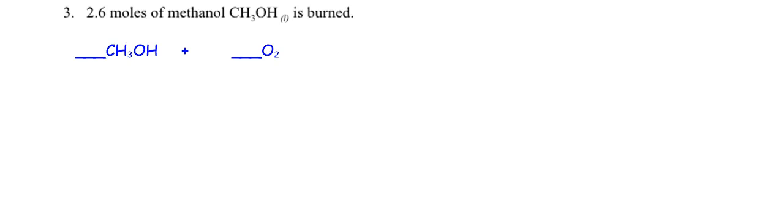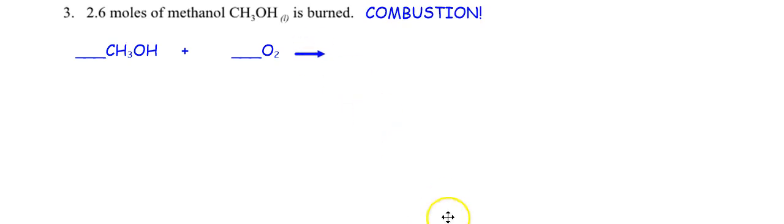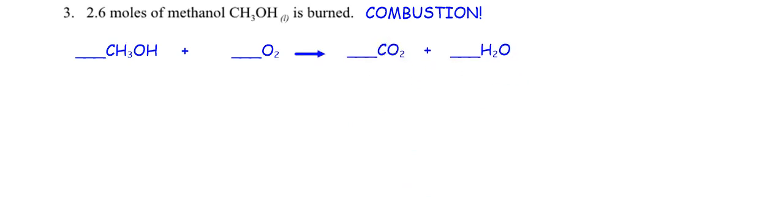Do I have an element and element? No. One reactant? No. An element and an ionic compound? No — this is covalent, they're all non-metals. An ionic and ionic? Definitely not. Do I have a hydrocarbon and oxygen? Yes! So what does that make this kind of reaction? Combustion. What do you always make in a combustion? Carbon dioxide and water.